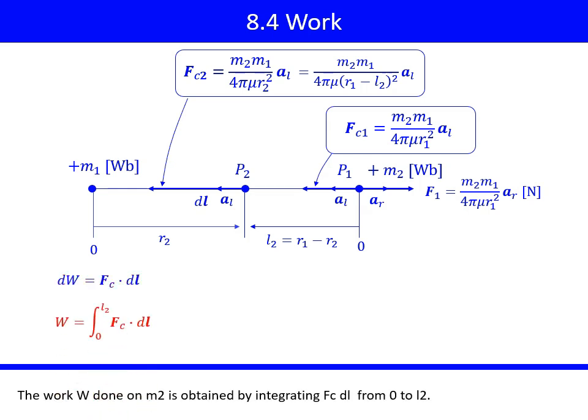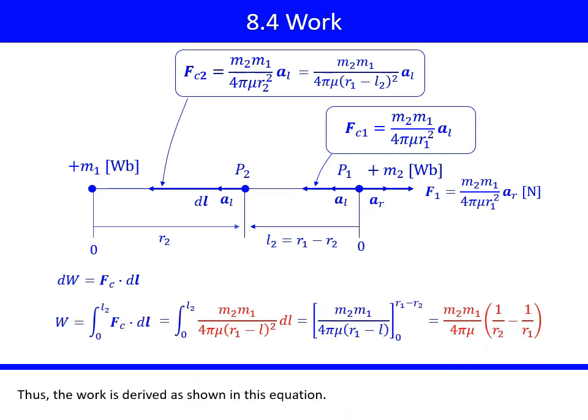The differential work DW is given as an inner product of Fc and DL. The work W done on M2 is obtained by integrating Fc·DL from 0 to L2. Thus, the work is derived as shown in this equation. The unit is Joule.